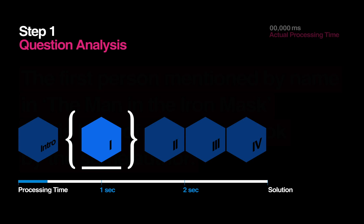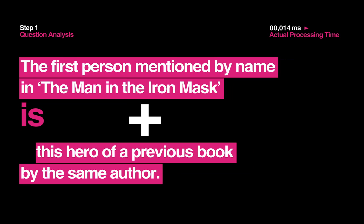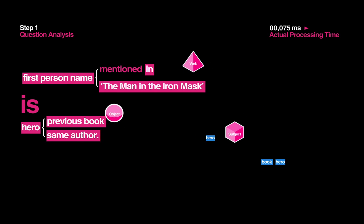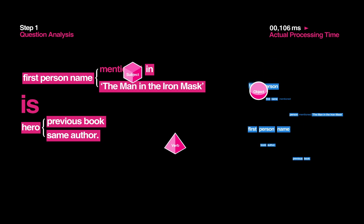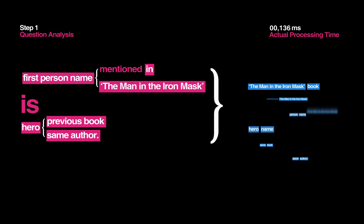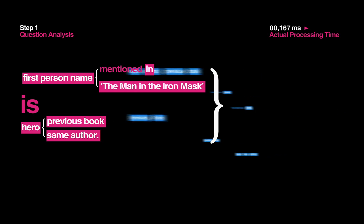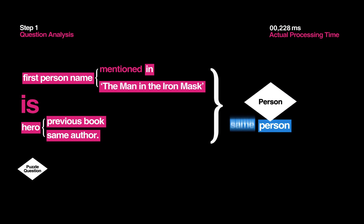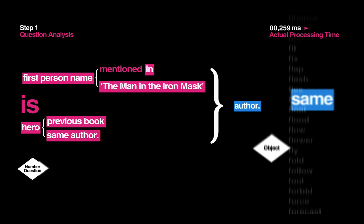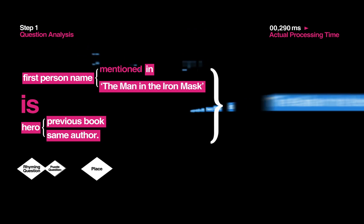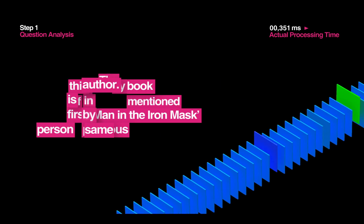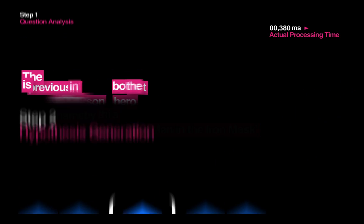Step 1: Question Analysis. The first thing Watson does is parse the question into its parts of speech and identify the different roles the words and phrases in the sentence are playing. This helps Watson determine two distinct things: what type of question is being asked, and what the question is asking for. During this early stage, Watson doesn't know how to find the best answer yet, so it increases its chances by looking at many different options of what the question might be asking for.